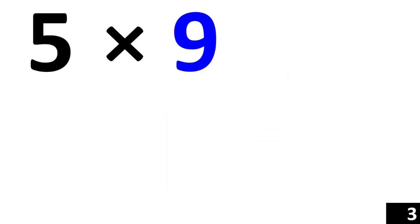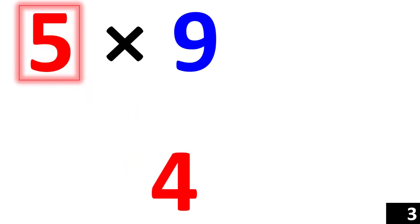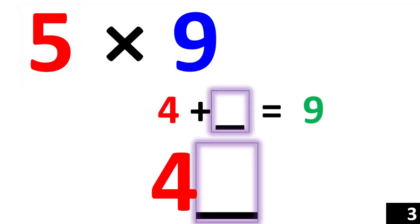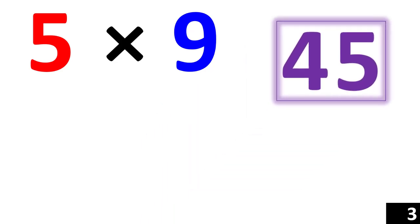How about 5 times 9? First, we look at the number 5 and we say, what's 1 less than the number 5? That's 4. So, 4 is your first number. Then we say, 4 plus what number gives us 9? 5. So, 5 is your second number and 45 is your answer.